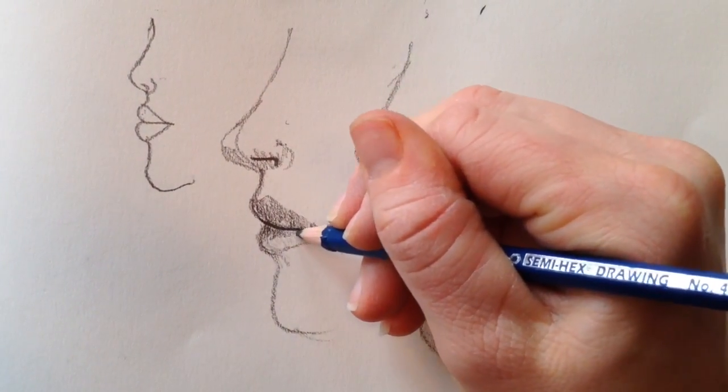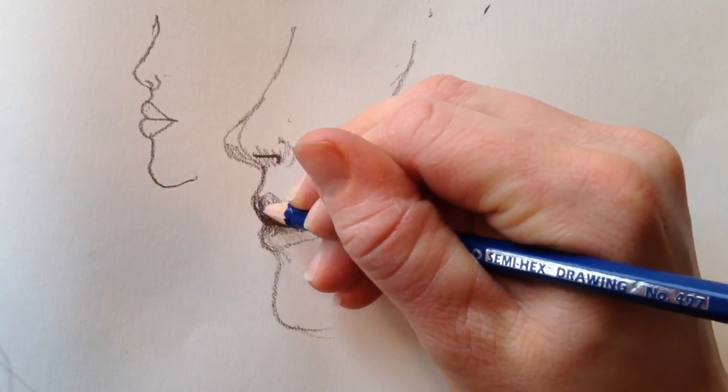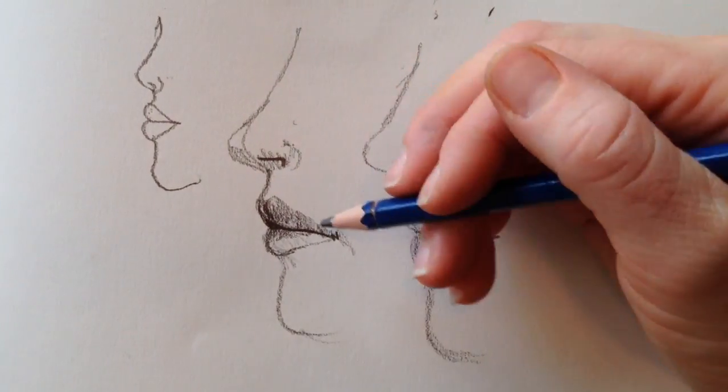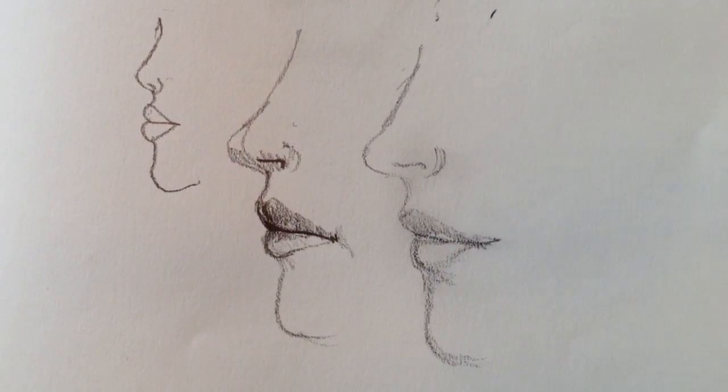Usually there's going to be a little shadow where that lip comes in right here and underneath. So there's a pretty simple mouth from the side.